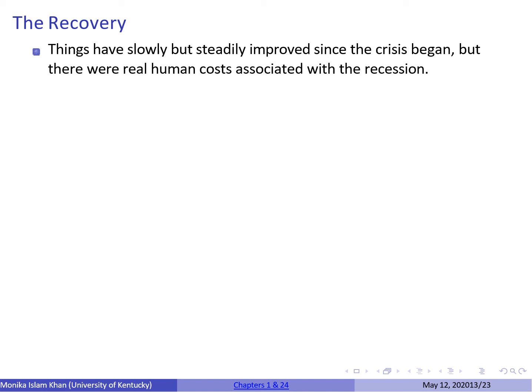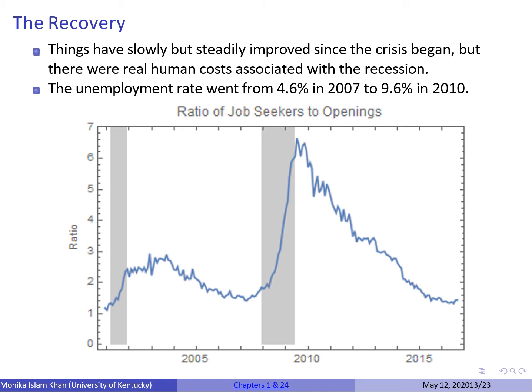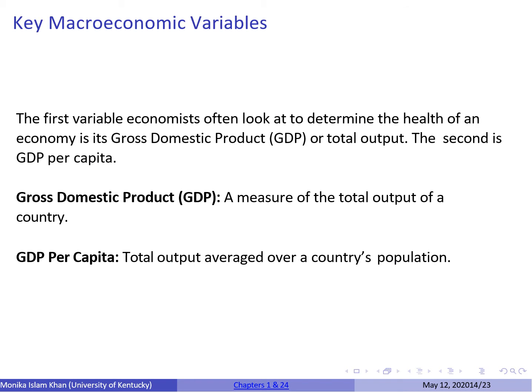There was a big increase in the unemployment rate between 2007 and 2010. If you look at the graph, you can see how the ratio of job seekers to job openings increased sharply between 2008 and 2010.